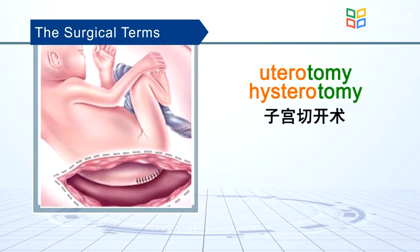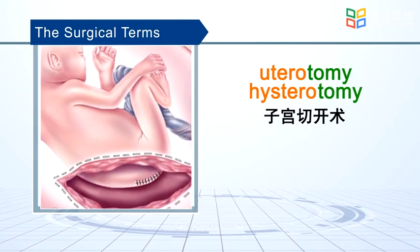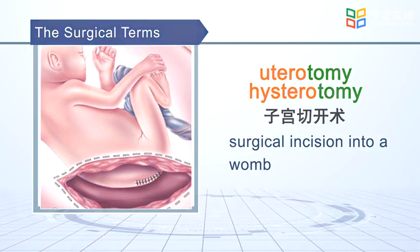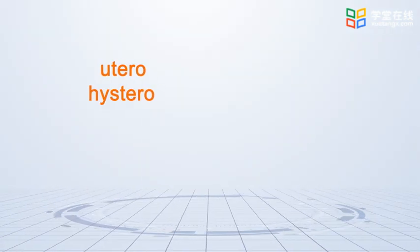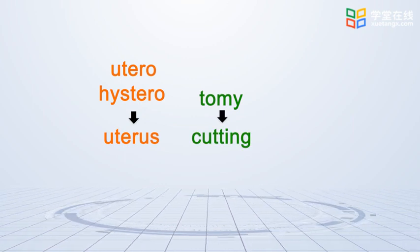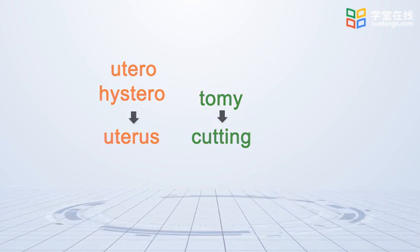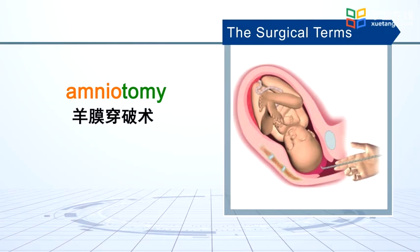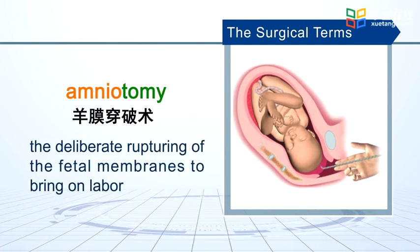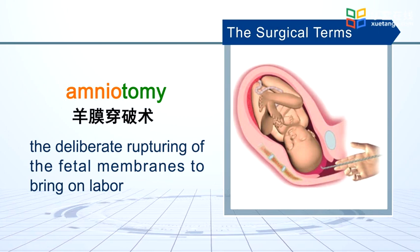Uterotomy or hysterotomy: surgical incision into the womb. Amniotomy: the deliberate rupturing of the fetal membranes to bring on labor.